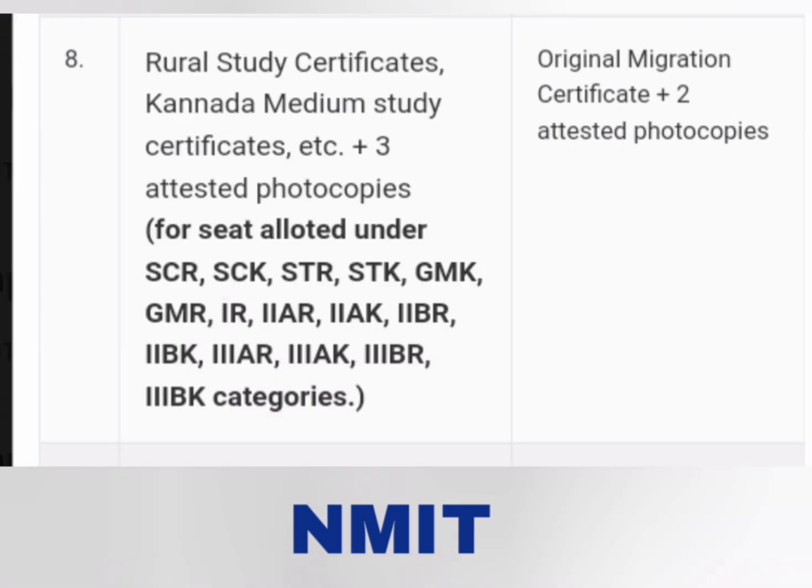The eighth document is the rural study certificate. These are related to all the categories which have studied under SCR, SCK, and STR, along with the Kannada medium certificate, plus three attested photocopies for all KCET and Diploma CET students. For the right side — management quota or COMED-K students — the original migration certificate with two attested copies is required.